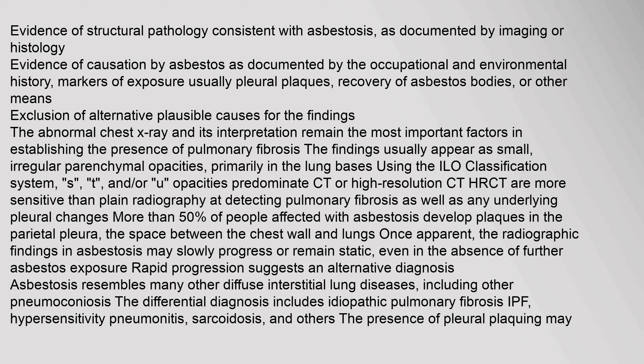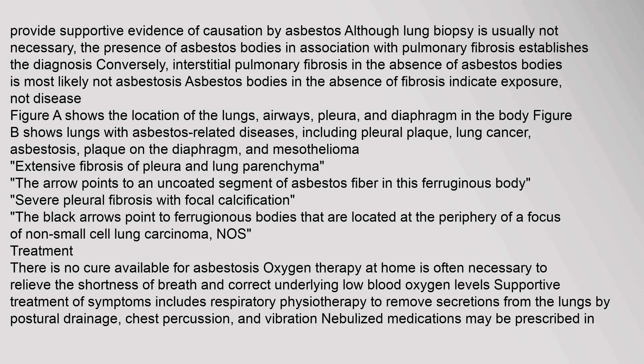CT or high-resolution CT (HRCT) are more sensitive than plain radiography at detecting pulmonary fibrosis as well as any underlying pleural changes. More than 50% of people affected with asbestosis develop plaques in the parietal pleura, the space between the chest wall and lungs. Once apparent, the radiographic findings in asbestosis may slowly progress or remain static, even in the absence of further asbestos exposure. Rapid progression suggests an alternative diagnosis. Asbestosis resembles many other diffuse interstitial lung diseases, including other pneumoconioses. The differential diagnosis includes idiopathic pulmonary fibrosis (IPF), hypersensitivity pneumonitis, sarcoidosis, and others. The presence of pleural plaquing may provide supportive evidence of causation by asbestos.